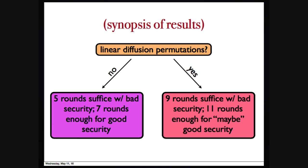Our result depends on how many rounds we have and what diffusion permutation you choose. If we can use any permutation, five rounds would give you not so good security and seven rounds would give you good security. But if you insist to use linear diffusion permutation, we need 9 rounds for not so good security and 11 rounds for conjecturally good security. Good security means the advantage of the distinguisher is at most Q²/2^n. Not so good means Q^W/2^n. W is the width of the CDN network. If W is a small constant, it doesn't matter. But if W is large, you want to have good security.